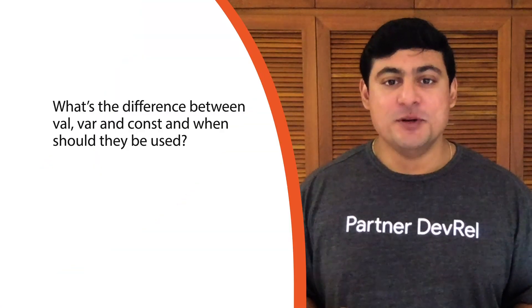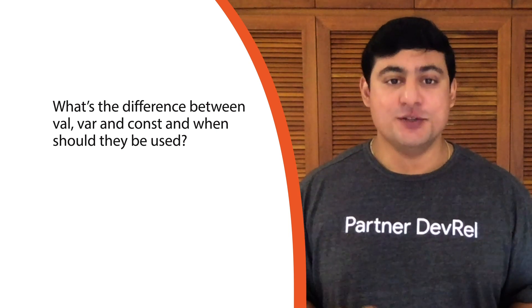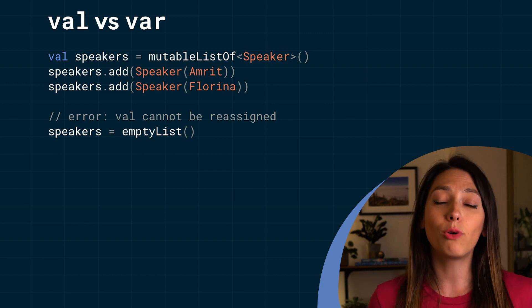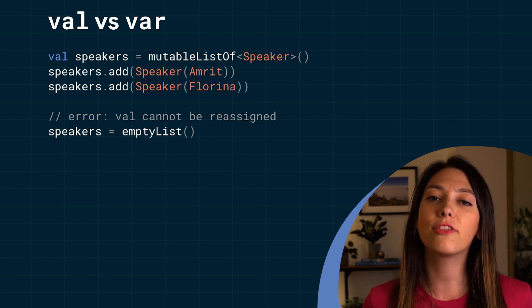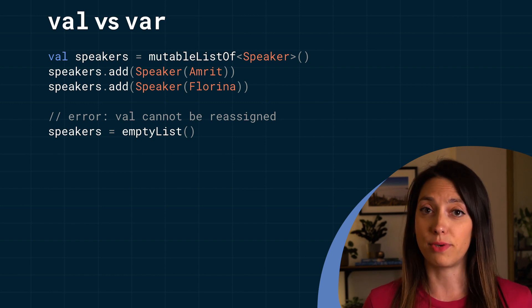What is the difference between val, var, and const, and where should they be used? Val and var are used to define variables. You would use val for read-only variables that are only assigned once when they're initialized. These are similar to the final variables in the Java programming language. In this code snippet, the variable is only initialized once. Its content can be modified afterwards, but the variable cannot be reassigned.